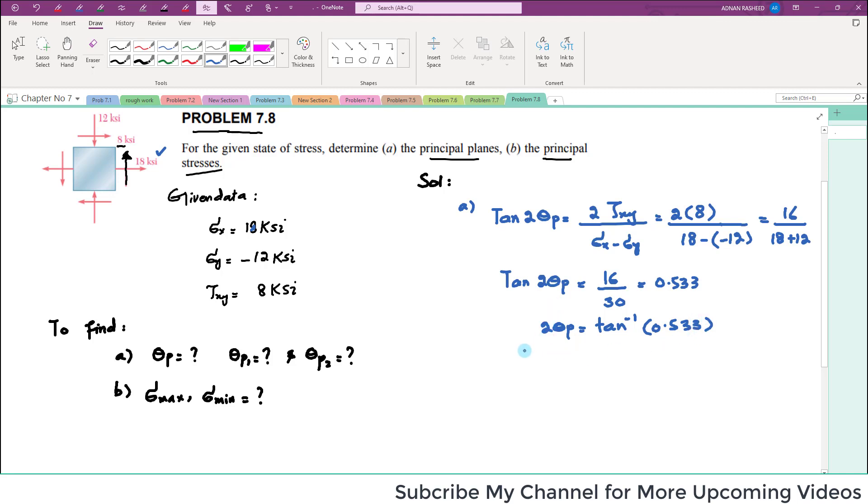So 2*theta_p will be equal to tan inverse of 0.533. And this 2*theta_p when you take tan inverse of this value is 28.07 degrees.